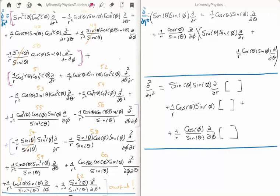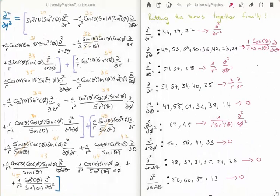Taking the second derivative with respect to y is the exact same procedure, so I won't go through it — I'll just give you the answer. The answer is here on the left-hand side of your screen. Once again, there are a terrible amount of terms — absolutely phenomenal in many respects. The terms are numbered from 29 to 45.